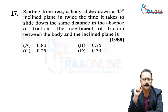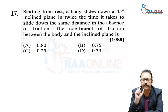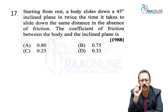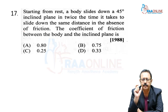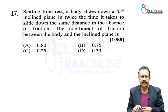Next problem: Starting from rest, a body slides down a 45-degree inclined plane in twice the time it takes to slide down the same distance in the absence of friction. The coefficient of friction between the body and the inclined plane is option C.